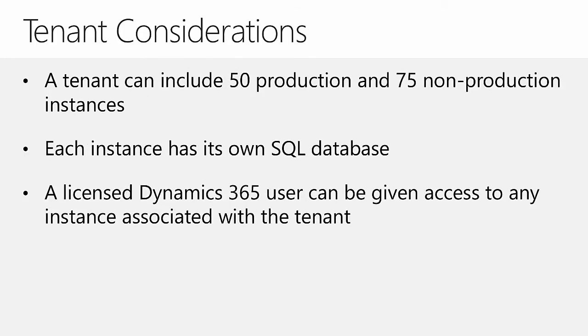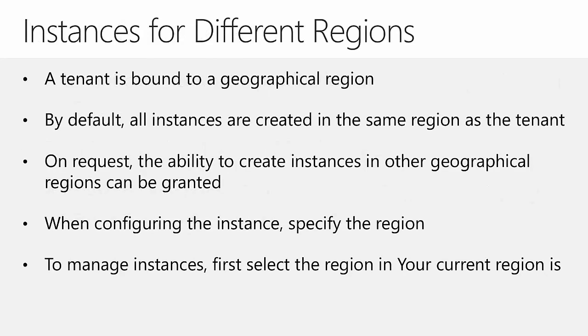When working with subscriptions, tenants, and instances, a tenant can include up to 50 production and 75 non-production instances, each with its own SQL database. Each tenant is bound to a geographical region, meaning all instances added to a subscription are created in the same region. However, some organizations may request the ability to create instances in a different region to be closer to geographically dispersed users. When this is granted, the admin can select the region where the instance will be created. Combined storage from all instances across all regions still applies to the total available storage for the subscription.